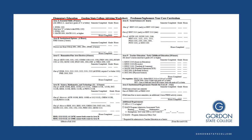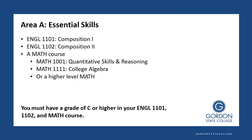Let's start with Area A, which is the Essential Skills. In Area A, you have to complete Composition 1 and Composition 2 — at most schools labeled as English 1101 and 1102. You also have to complete a math course of some kind. You may choose Math Modeling, Quantitative Skills and Reasoning, College Algebra, or a higher level course like Pre-Calculus or Calculus. It is very important to know that you must make a grade of C or higher in these courses.